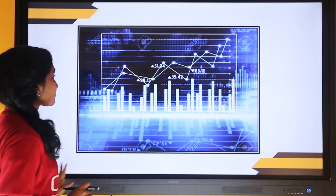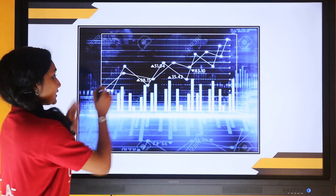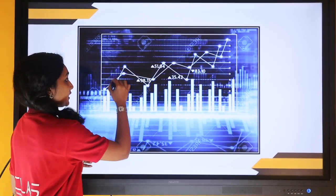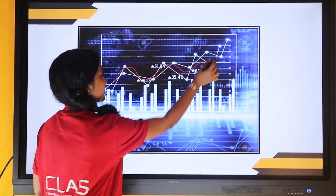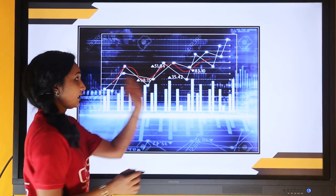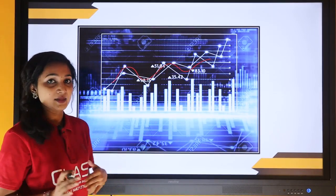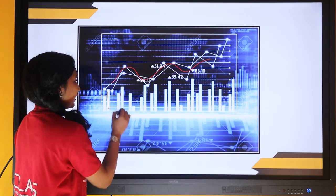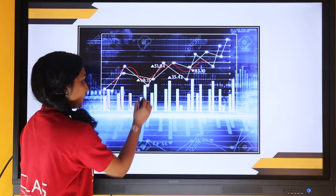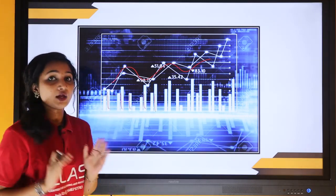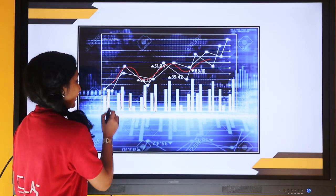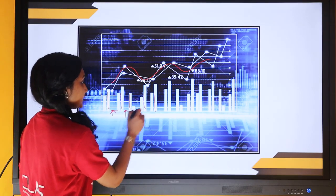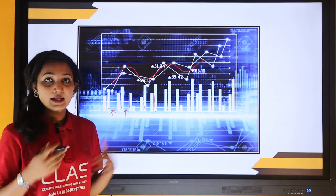This graph shows the digital system and analog system. In the analog signal, the value is continuous and we can have any values within the given limit. But in the case of a digital system, we have certain particular levels and we are able to take only those levels. We are not able to take any intermediate values between the successive levels.